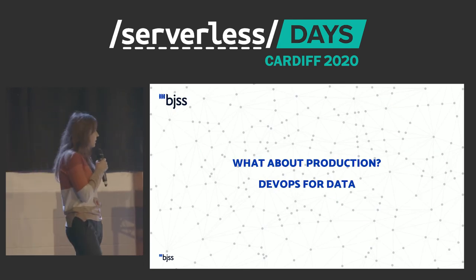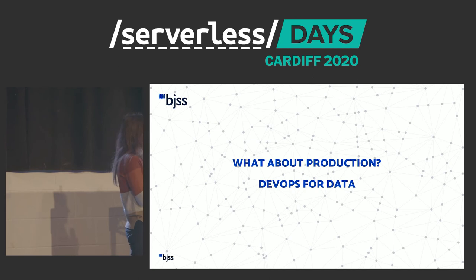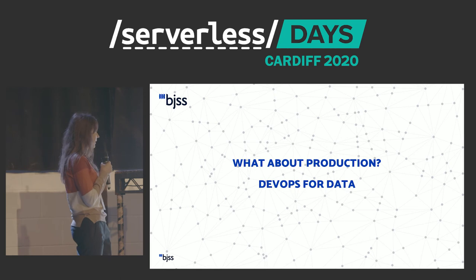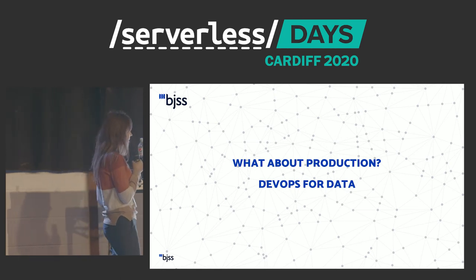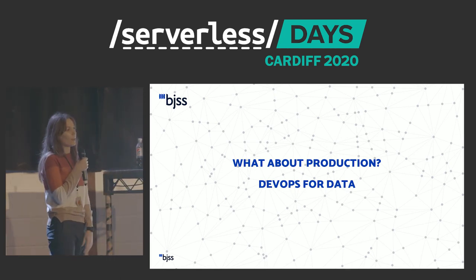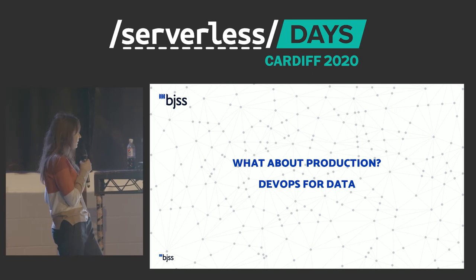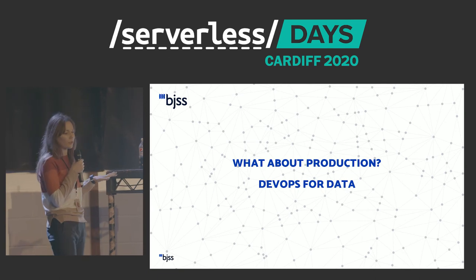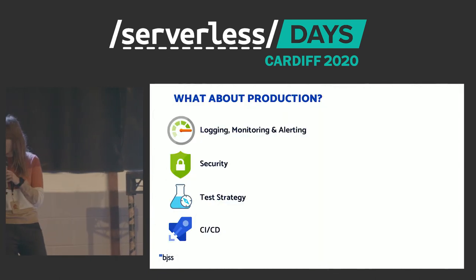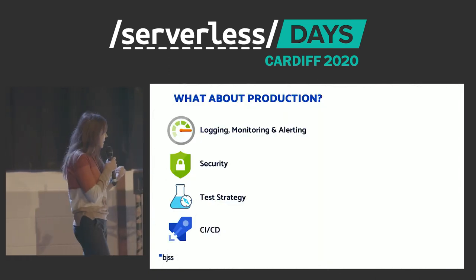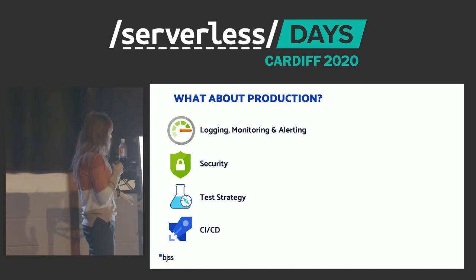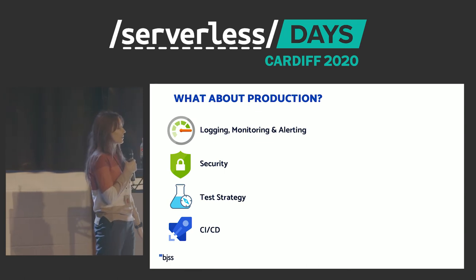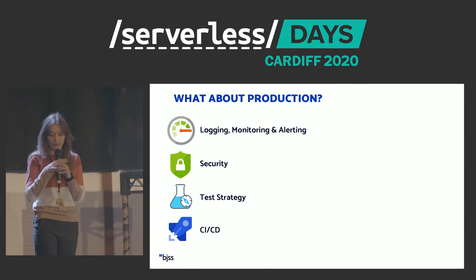But what about production? I want to address the four main things we needed to think about when productionizing the system: logging, monitoring and alerting; security; creating an efficient testing strategy in the cloud; and release automation through CI/CD pipelines.